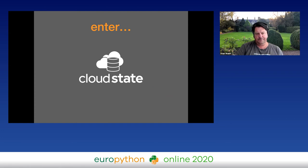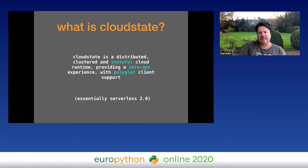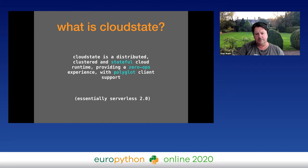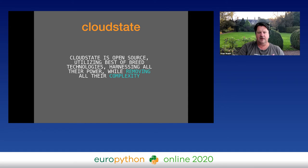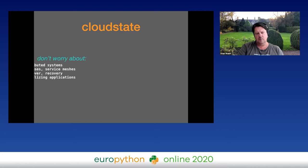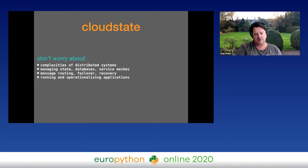That's where CloudState comes in. CloudState is a distributed, clustered, and stateful cloud runtime providing a zero-ops experience with polyglot client support — essentially serverless 2.0. It's open source and best of breed, harnessing all the power of open source technologies while removing the complexity as much as possible from things like Kubernetes and whatever database you're going to be using — be it Spanner, SQL, or NoSQL. We really just lift it up to make it so developers don't need to think about the ins and outs; you leave it to this platform.